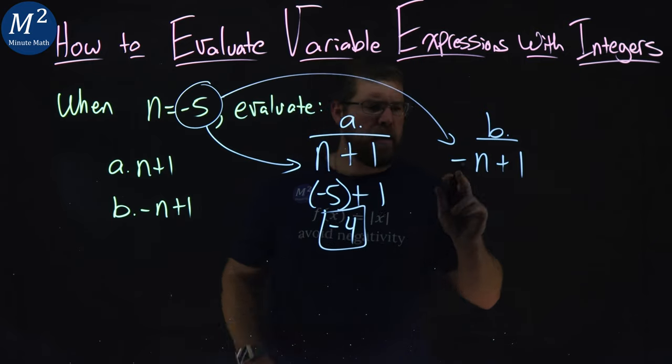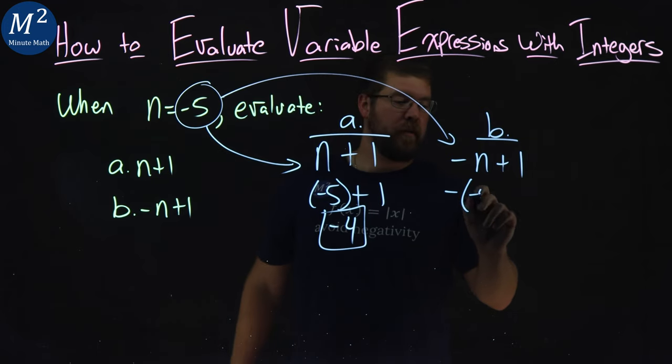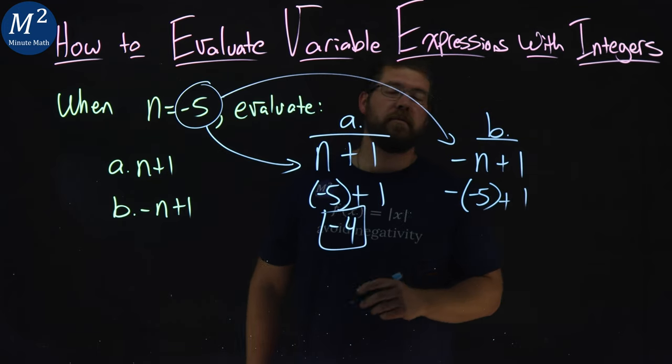Now be careful with the double negatives here. There's a negative on the outside, and now we're substituting for n a negative 5 on the inside. 5 plus 1.